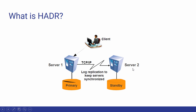For high availability, the primary and standby servers should be close to each other and connected through LAN. If it is a disaster recovery solution, the standby server can be in some other city altogether and connected to the primary database server through a wide area network (WAN). Right now, the primary and standby database servers are connected to each other via a TCP/IP connection.